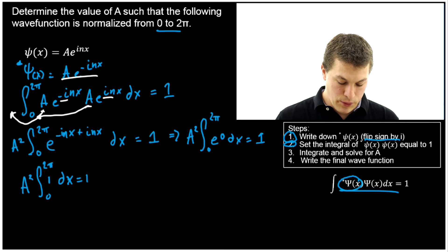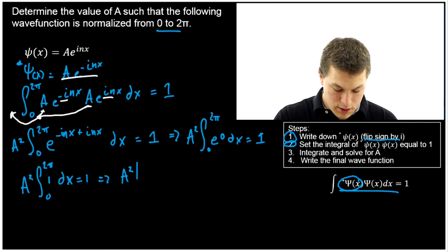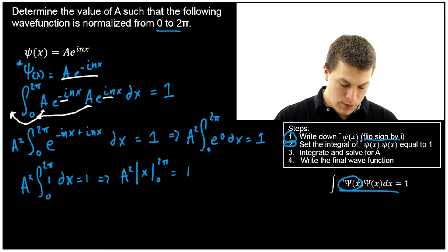Alright. Let's continue. When we integrate this guy, the integral of one is just x from zero to 2π. That's still equal to one.